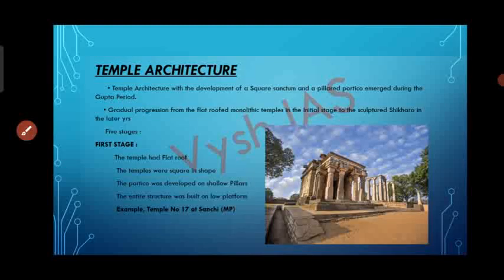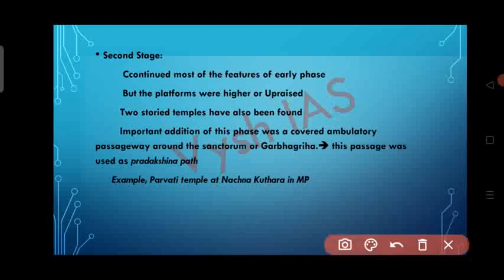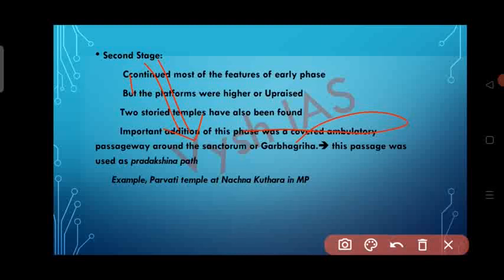In the second stage, most features of the early phase continued, but the platforms were higher and two-storey temples have also been found. An important feature of the second stage was the covered ambulatory passageway around the Sanctum Sanctorum or Garbagriha, which was used as a Pradikshana path. Example: Parvati Temple, Nachna Kuthara, Madhya Pradesh.